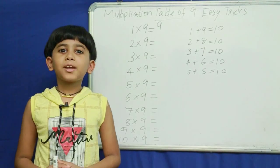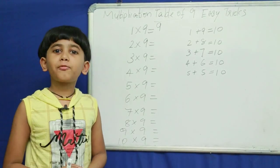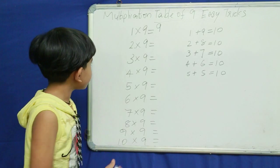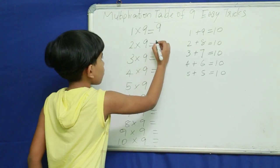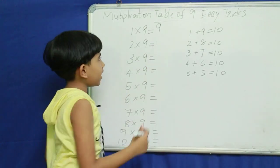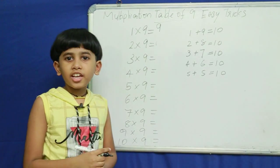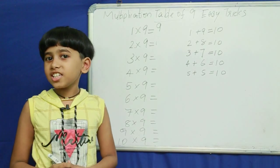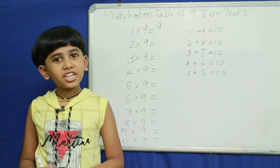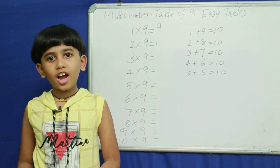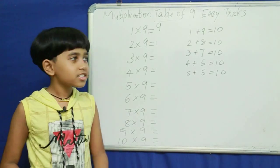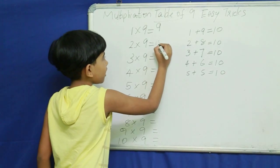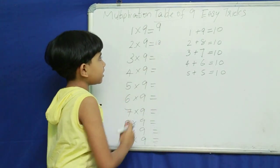First, predecessor of 2 — what? 1. Next, what do you add to 2 to get 10? 8. So 2 nine's are 18.